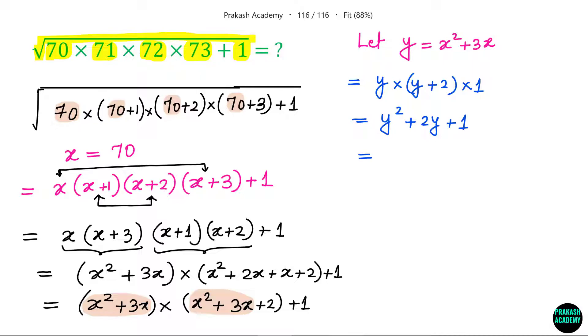This is simply a plus b whole square because this is a square plus 2ab plus b square. This is nothing but y plus 1 whole square. You see this whole term can be written as a square of something. But the original term is a square root. So the square root of 70 times 71 times 72 times 73 plus 1 is basically square root of y plus 1 whole square. This means this is simply equals to y plus 1.